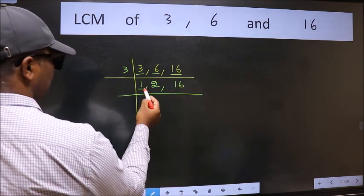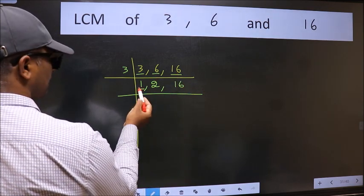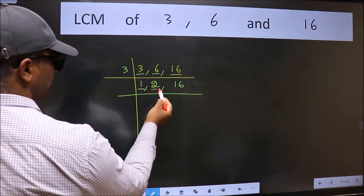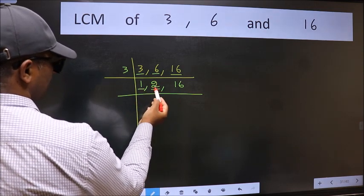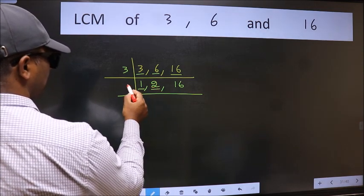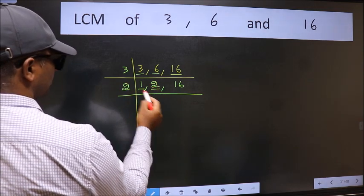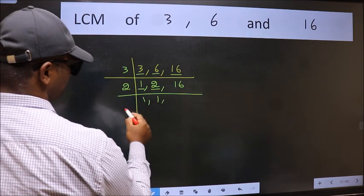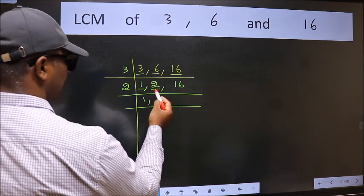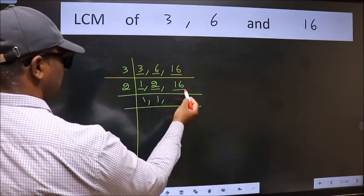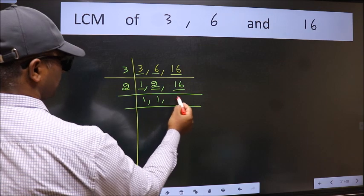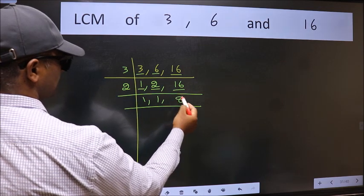Now we got 1 here, so focus on the next number, 2. 2 is a prime number, so 2 goes into 2 once. The other number 16 — when do we get 16 in the 2 times table? 2 times 8 is 16.